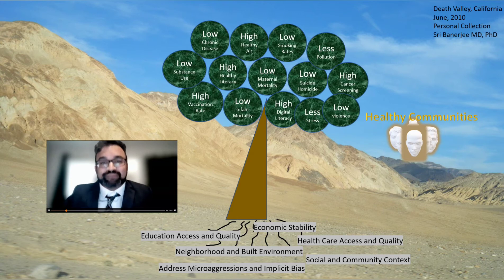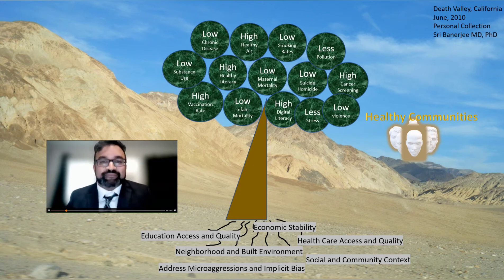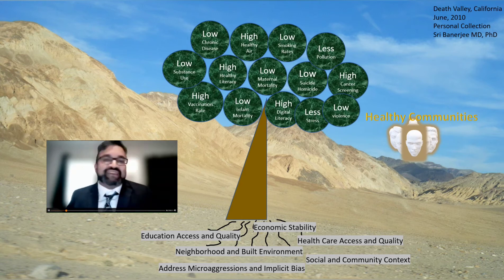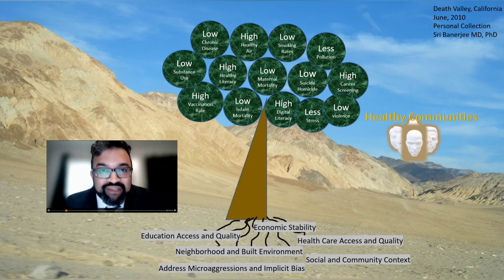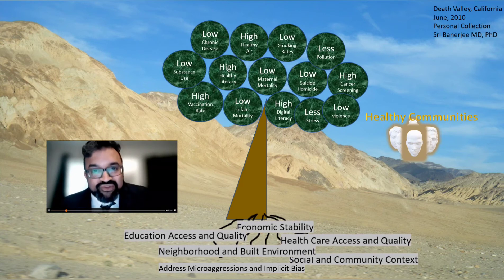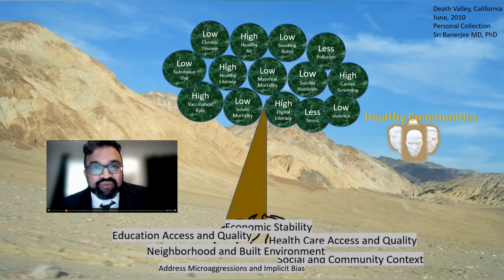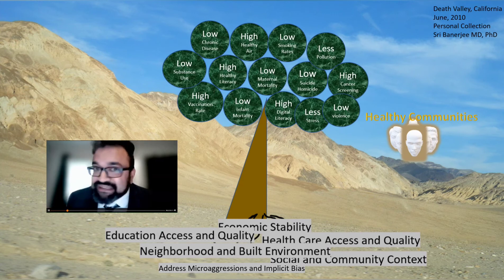So the branches are these outcomes. The trunk would be talking about maybe engaging in risk behaviors, some sort of individual behavior. But then the root cause — that is where we want to think about social determinants, because those are the factors which people really can't see.